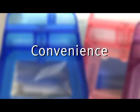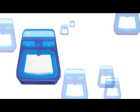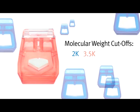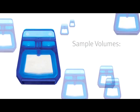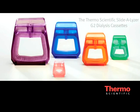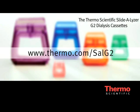Slide-A-Lyzer G2 dialysis cassettes include molecular weight cutoffs of 2K, 3.5K, 10K, and 20K, and they're designed for sample volumes ranging from 0.5 milliliters to 70 milliliters. For more information, please visit www.thermo.com/SALG2.